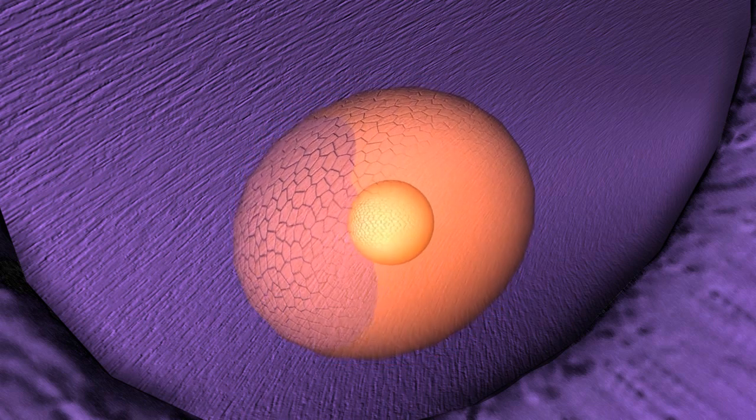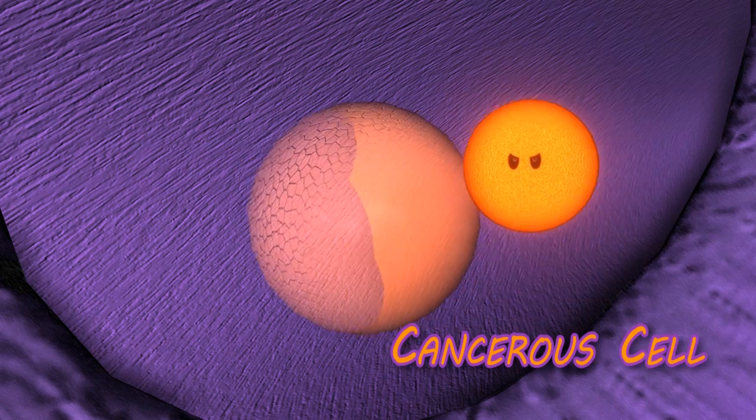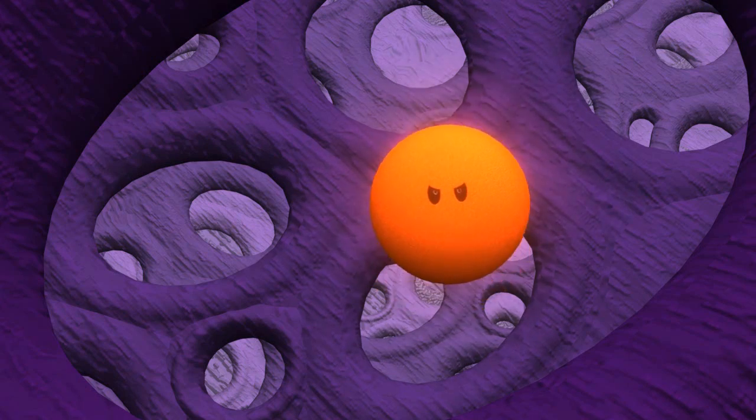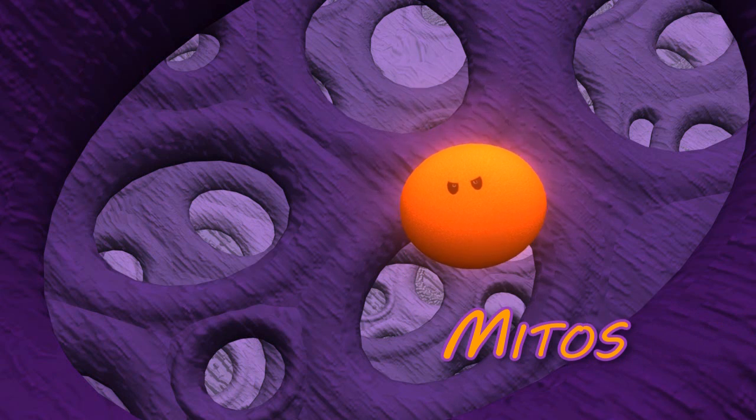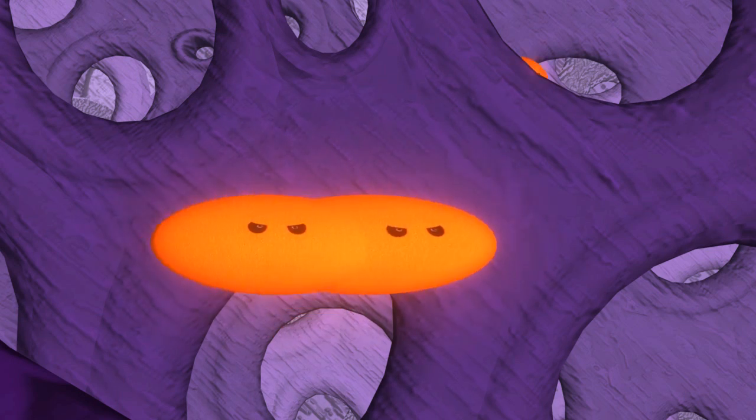Sometimes a defective blood cell is created. The cell cannot perform its vital role efficiently. Usually a signal would tell the cell to destroy itself. However, this cell ignores the body's instructions and begins a process called mitosis. It divides itself into two, making an exact copy.